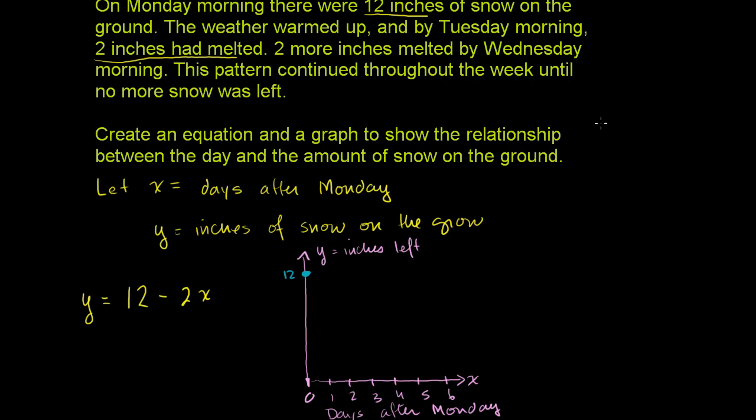Let me create a table. If we do x and y, this is the days after Monday. So it's 0, 1, 2, 3, 4, 5, 6. And then on the first day, we have 12 inches on Monday, 0 days after Monday. Then we lose 2 inches each day. On day 1, we have 10, day 2, 8, then 6, 4, 2, 0.